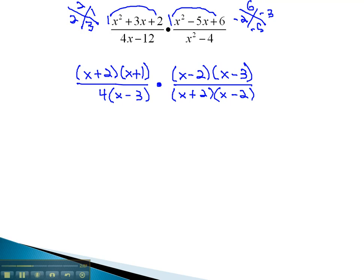Now, we're allowed to reduce by dividing out the factors in common in both the numerator and denominator. Notice the x plus 2 appears on top and bottom. Same with the x minus 2 and the x minus 3. All that's left for this problem is the x plus 1 over 4, which becomes our final solution.